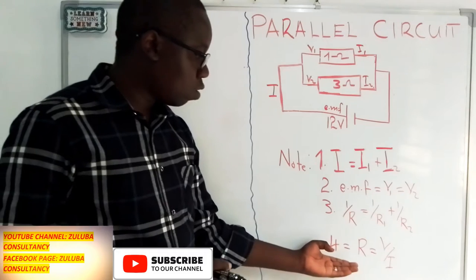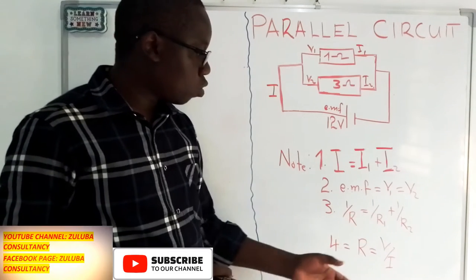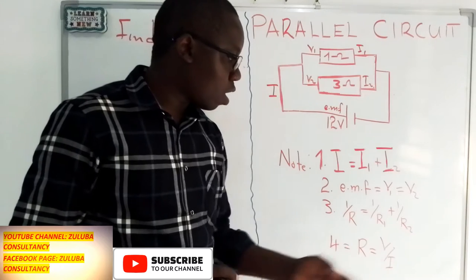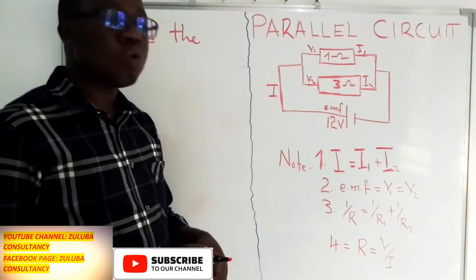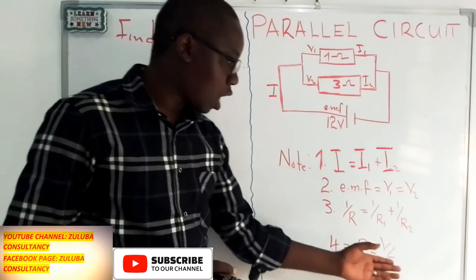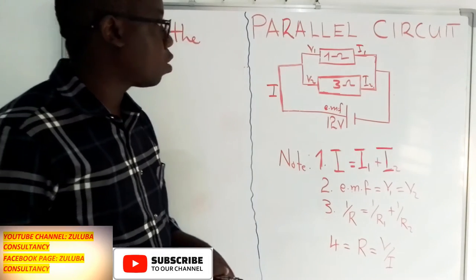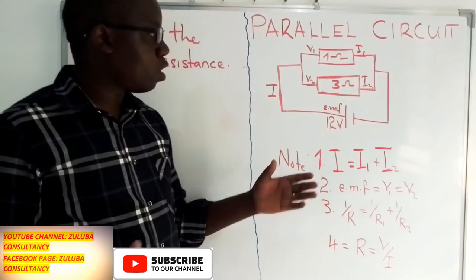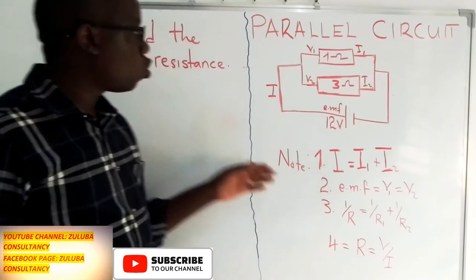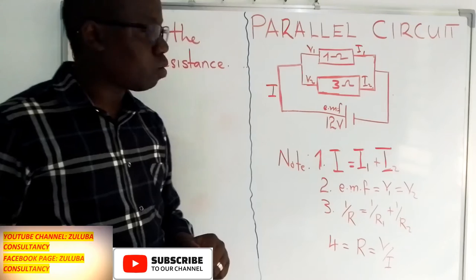Last but not least, we need to know Ohm's law, which tells us that resistance is directly proportional to the potential difference or voltage and inversely proportional to the current. Let us see how we use these four points to answer different questions under parallel circuits.